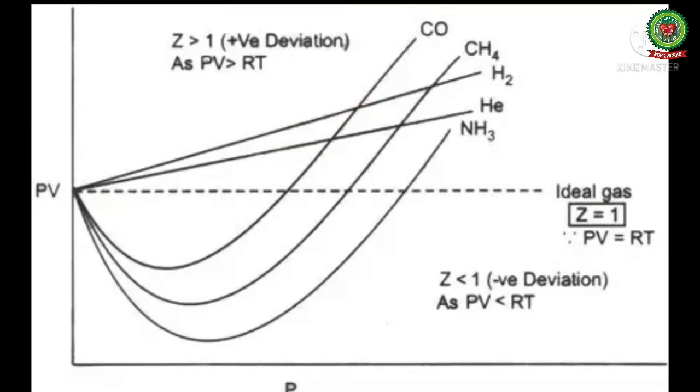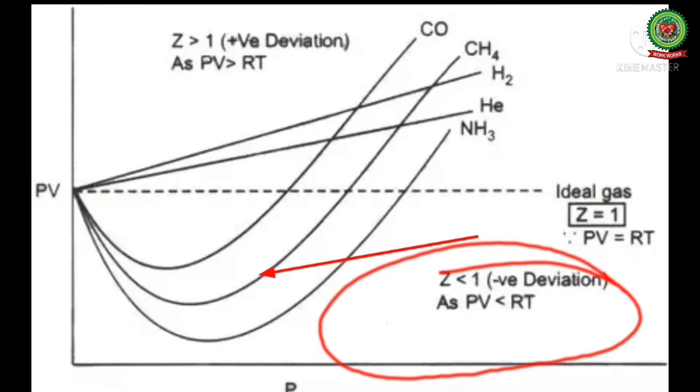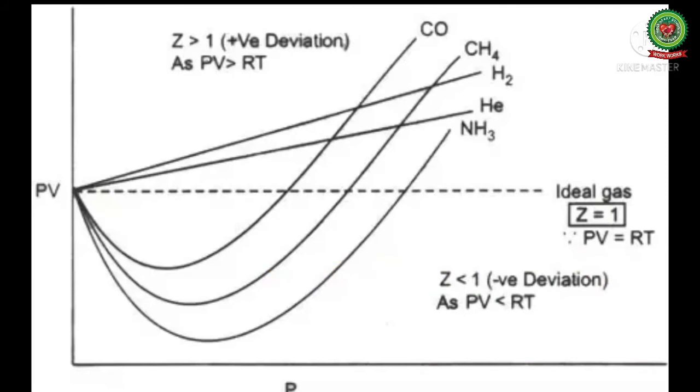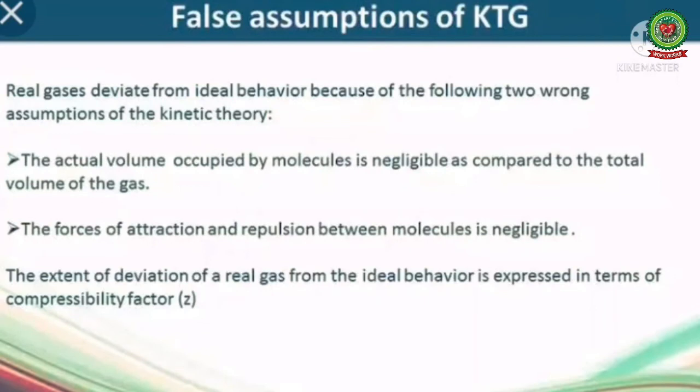In case Z is less than 1, it means the gas shows negative deviation from ideal behavior and is more compressible. It is observed that deviations from the gas law are under high pressure and low temperature. Van der Waals suggested that these deviations are due to the two faulty assumptions of kinetic theory of gases. The first is volume occupied by gas molecule is negligibly small as compared to the total volume occupied by the gas, and the second one is the forces of attraction between gas molecules are negligible.